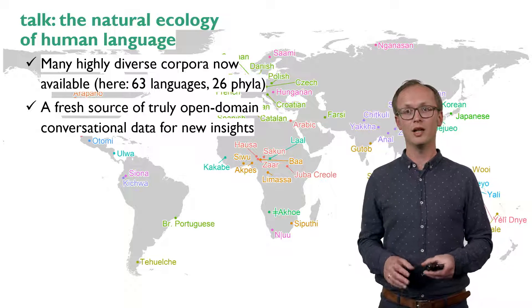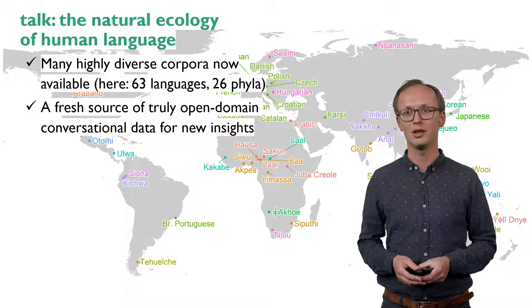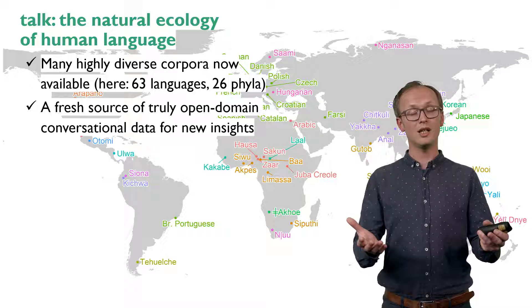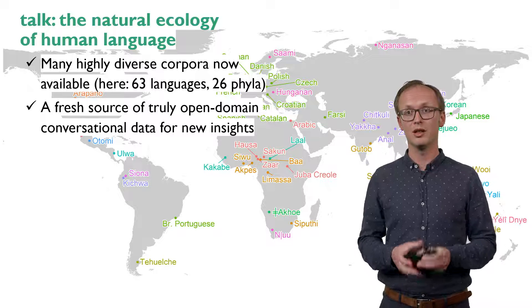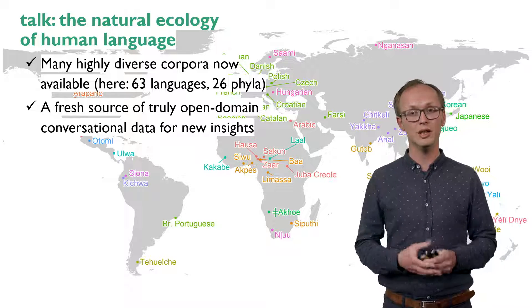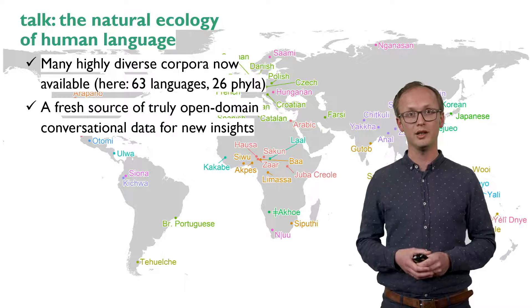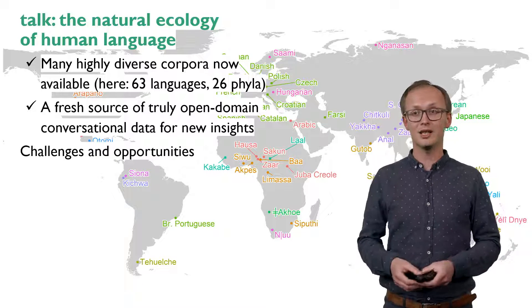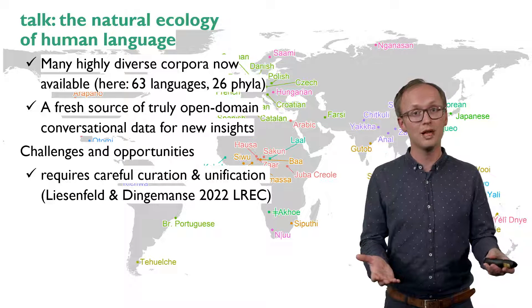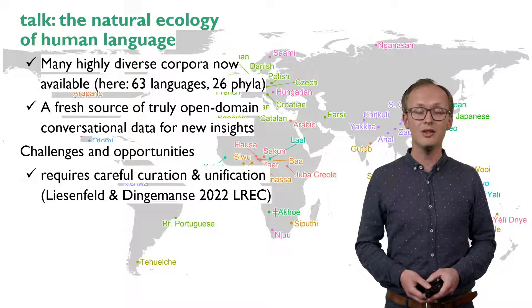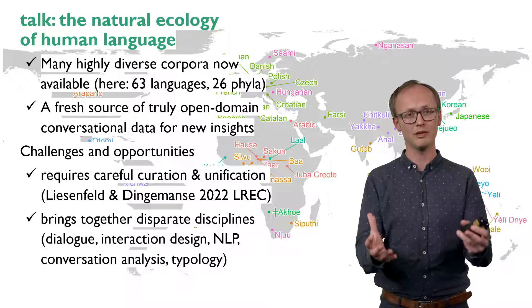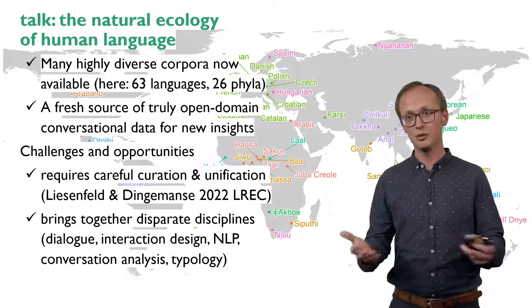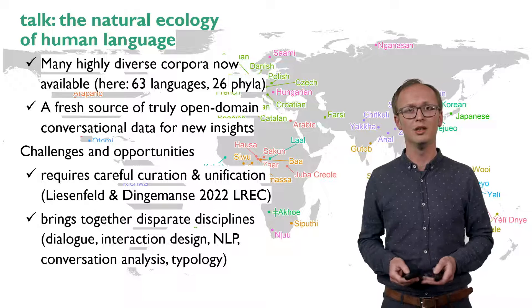We argue that these kinds of corpora and the linguistic and cultural diversity that they embody represent an untapped resource for language and speech technologies. If you want to understand the basics of human interactional infrastructure, this is where you need to look. If you're interested in seeing truly open domain conversation, this is where you find it. This is the natural ecology of human language. Of course, this kind of data also comes with challenges. It requires careful curation and unification, and engaging with it requires bringing together insights from a wide range of disparate fields: dialogue modelling, interaction design, NLP, conversation analysis, linguistic typology. Our paper builds on these fields and more.